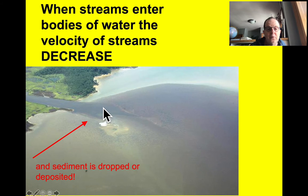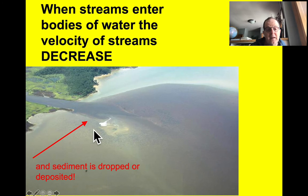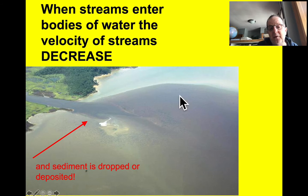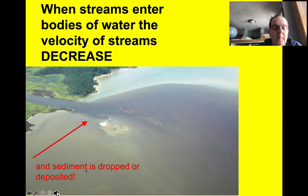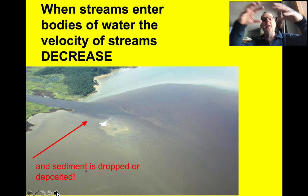Here you can see a stream moving into a lagoon. This is a slow-moving stream, so it's not carrying pebbles or sand — probably only silt and mostly clay, which is still suspended but will, over time if the water is undisturbed, slowly deposit itself on the bottom of this lagoon-like feature, which is behind a barrier beach like the south shore of Long Island or Long Beach Island in New Jersey.